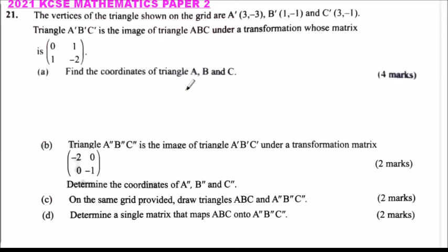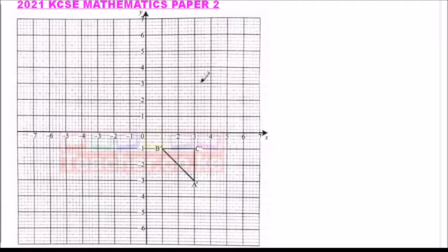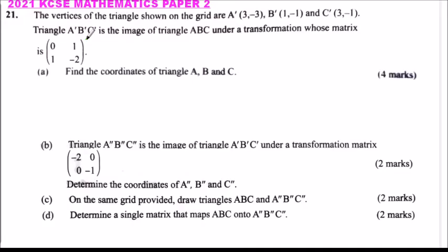This is question number 21. The vertices of the triangle shown on the grid are A'(3, -1), B'(1, -1), and C'(3, -1). The triangle A'B'C' is an image of triangle ABC under a transformation whose matrix is [0, 1; 1, -2].